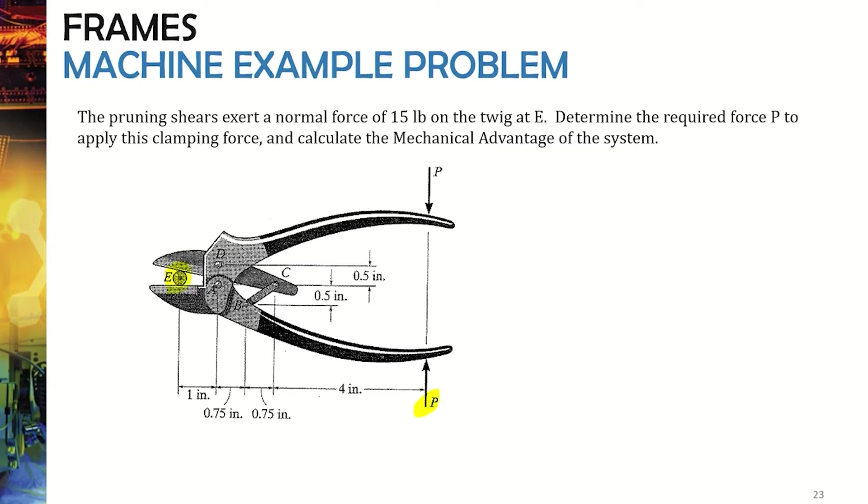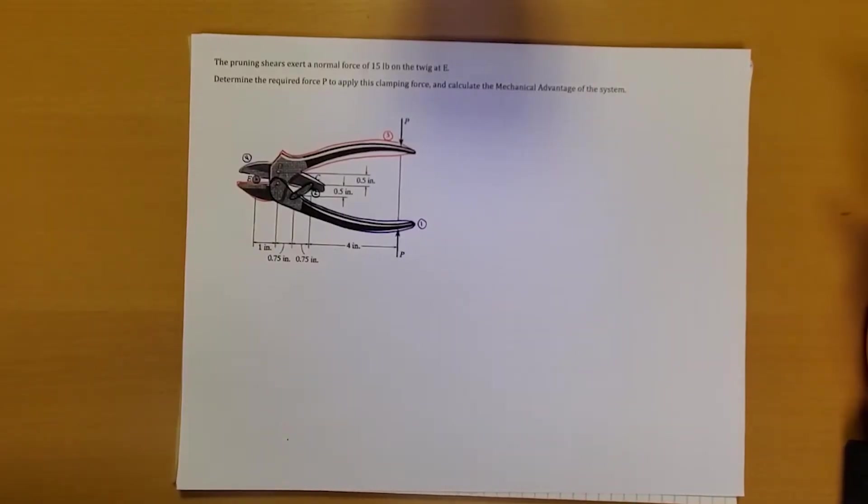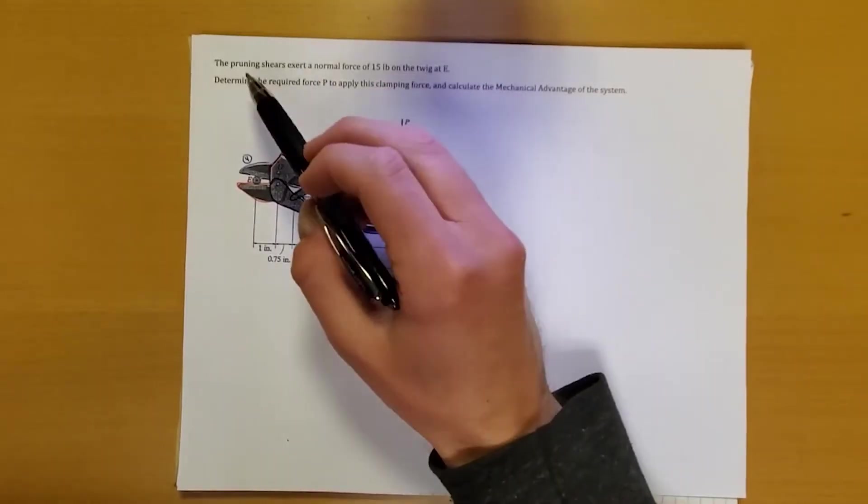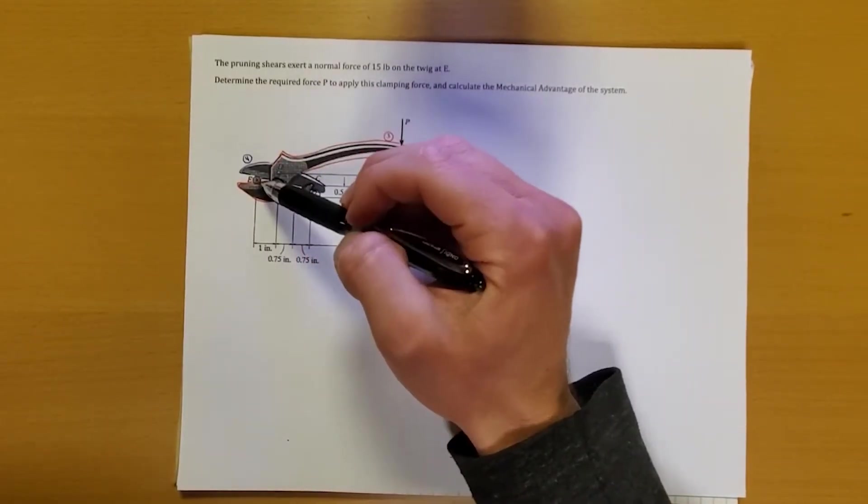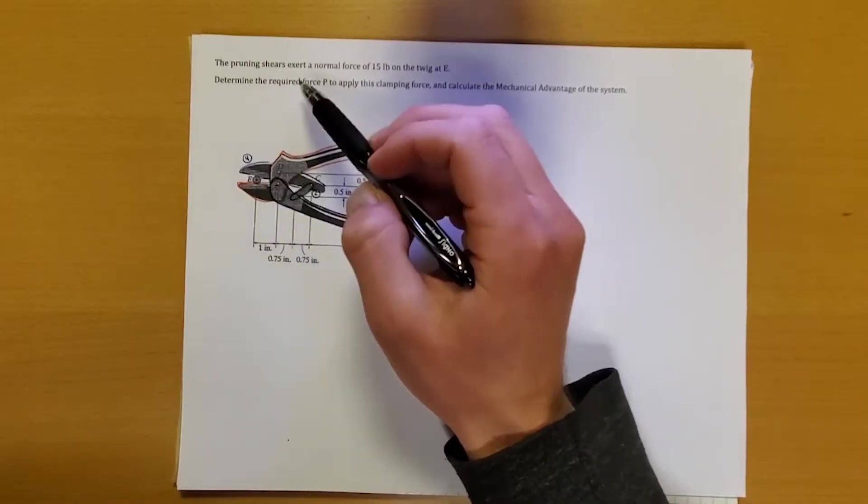What I'll do now is I'll switch to the handwritten solution and show you how to approach a problem like this. Alright, now let's look at this machine problem, which really is just a frame problem in disguise. Transformers! So anyway, what we have here is we've got some pruning shears, ultra-dangerous stuff. Don't put your finger in there. That'll cut your finger.